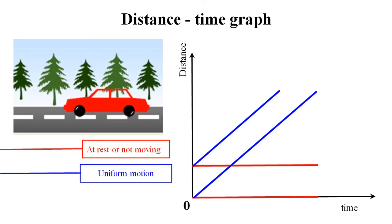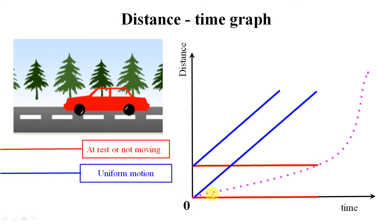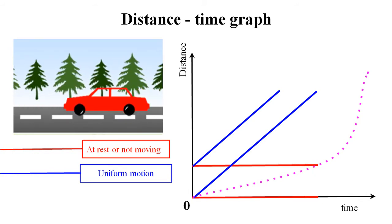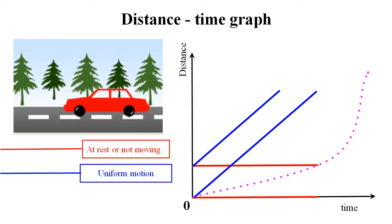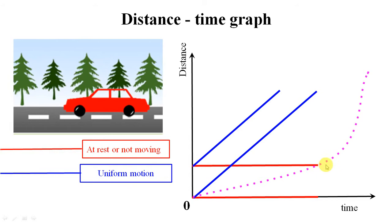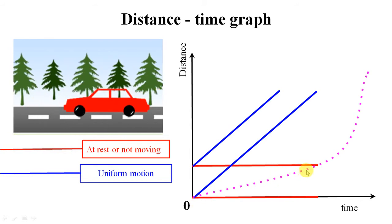Let's have a look at the third case. To some extent the body has a straight line on the distance-time graph, but after a certain point, in a very short interval of time the body has covered a huge amount of distance, which means there is a change in the speed of the body.